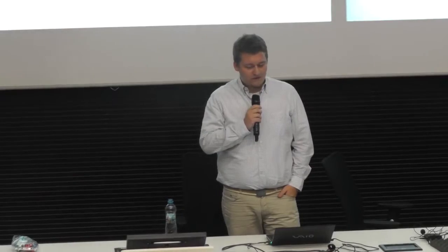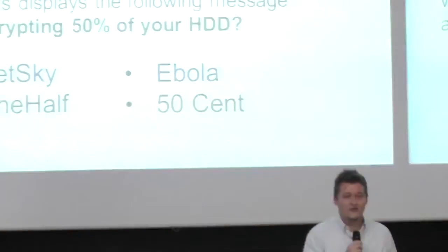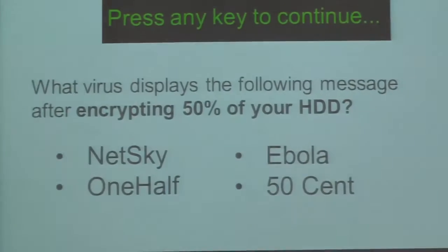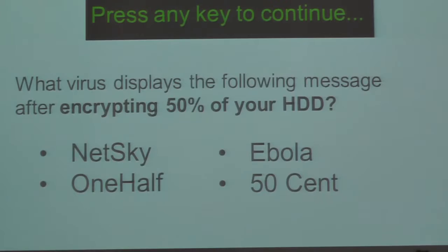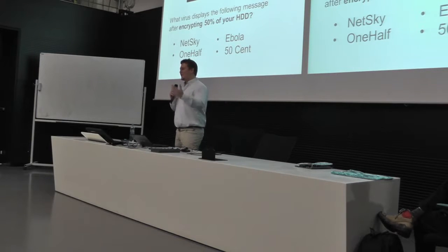Here's another example — a virus from 1994 that displays a message after finishing encrypting 50% of your hard drive. The options are Netskai, Ebola, OneHalf, or 50 Cent. OneHalf. So you see, viruses in the past were very simple. When you got infected, it was very easy to see that you were infected. Also, the security perimeters we needed to defend 20 years ago were much easier, because all networks were physical networks and the physical perimeter was the same as the network perimeter.